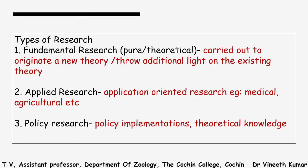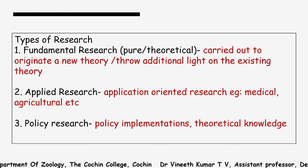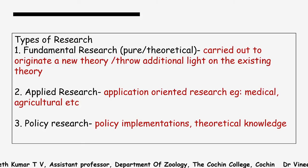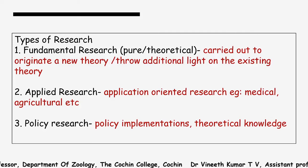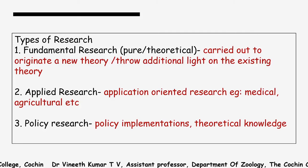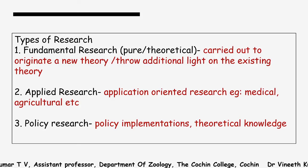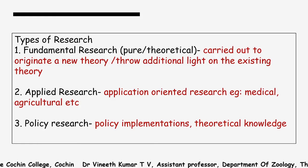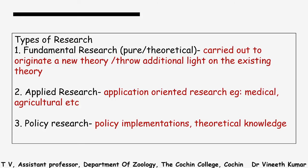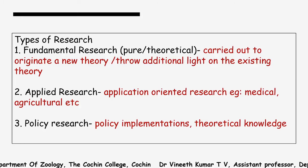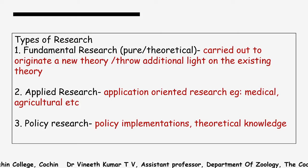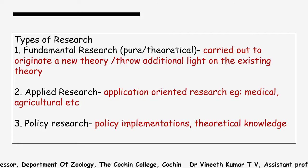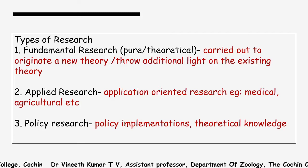For example, earlier governments had 5-year plans — a plan for what will be done over the next 5 years. All of those are based on policy research. These are the main types of research: fundamental research, applied research, and policy research.